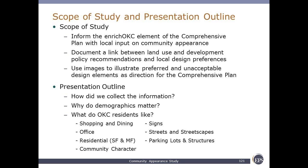This outline covers: how do we collect the information, why do demographics matter, and what do Oklahoma City residents like. There are seven different categories — shopping and dining, office, residential (both single-family and multi-family), community character, signs, streets and streetscapes, and parking lots and structures. That was the full range of images presented.